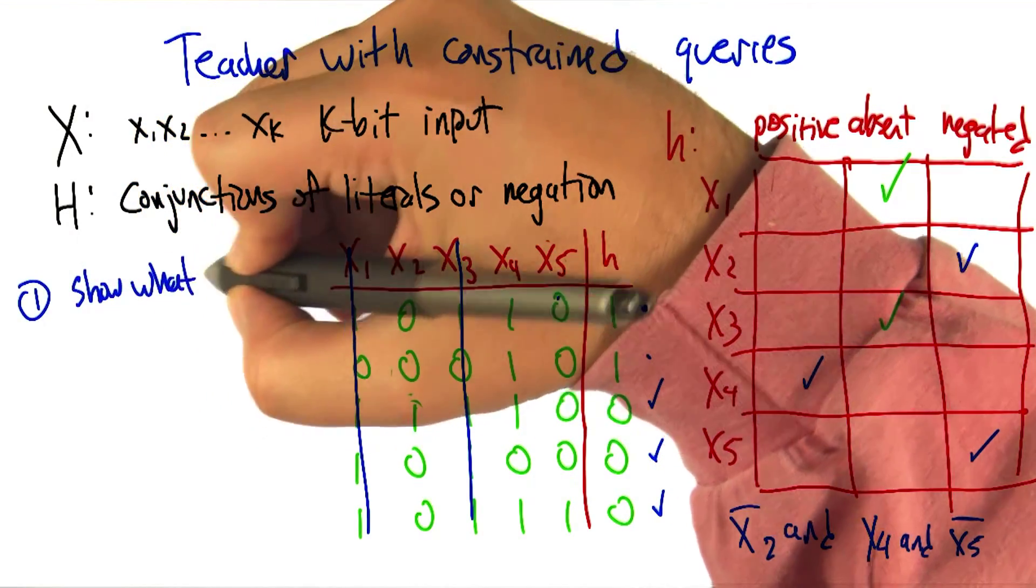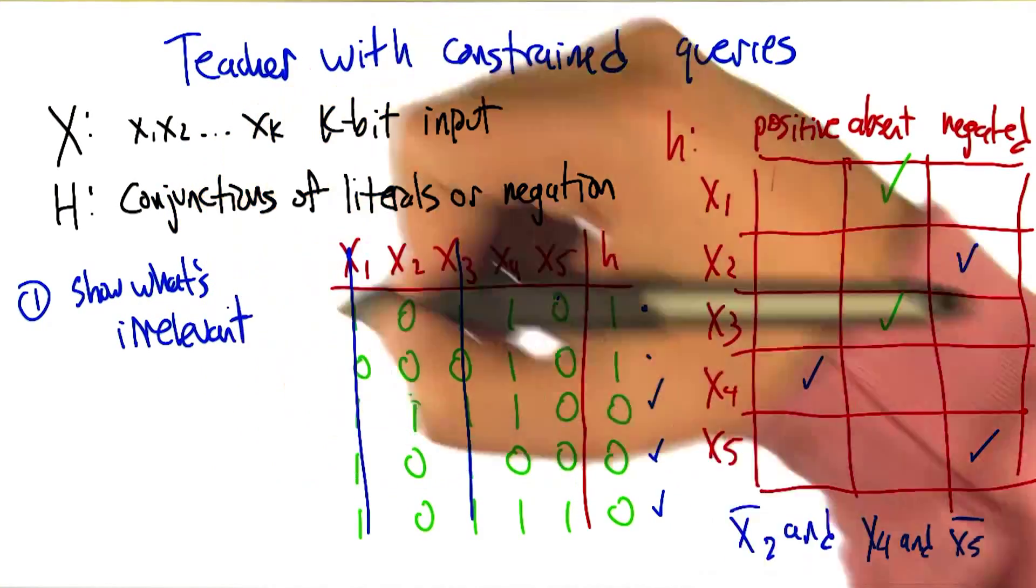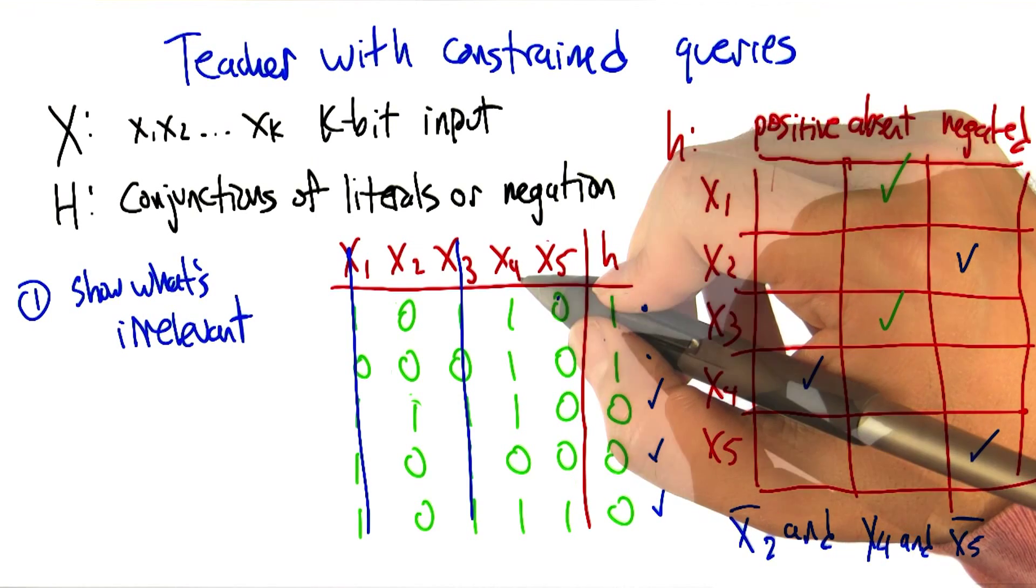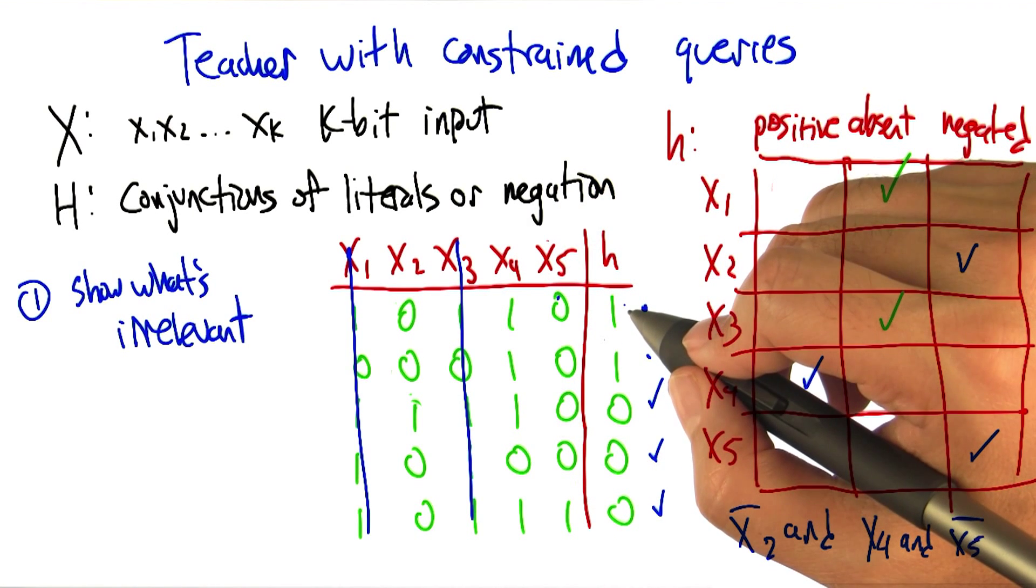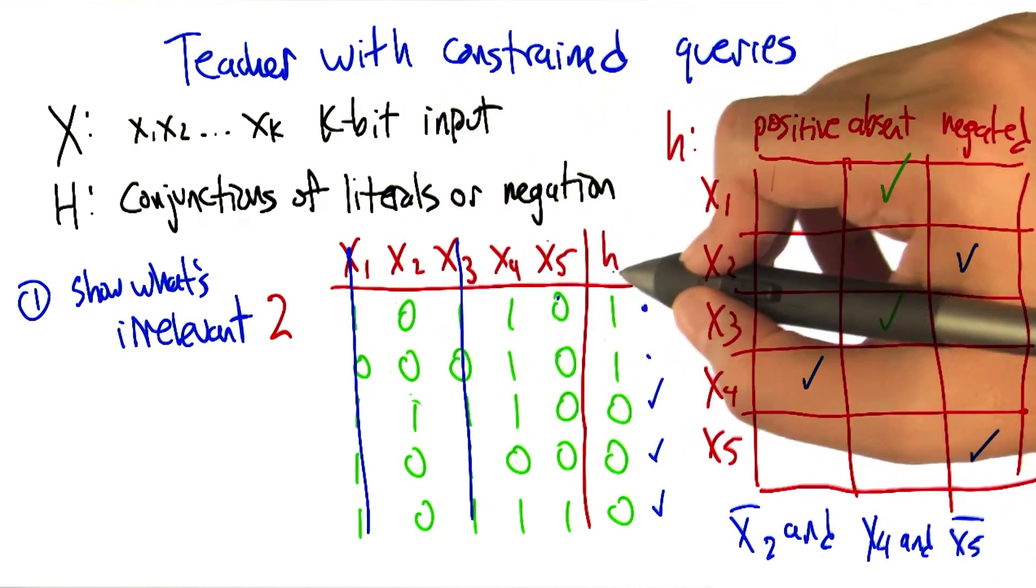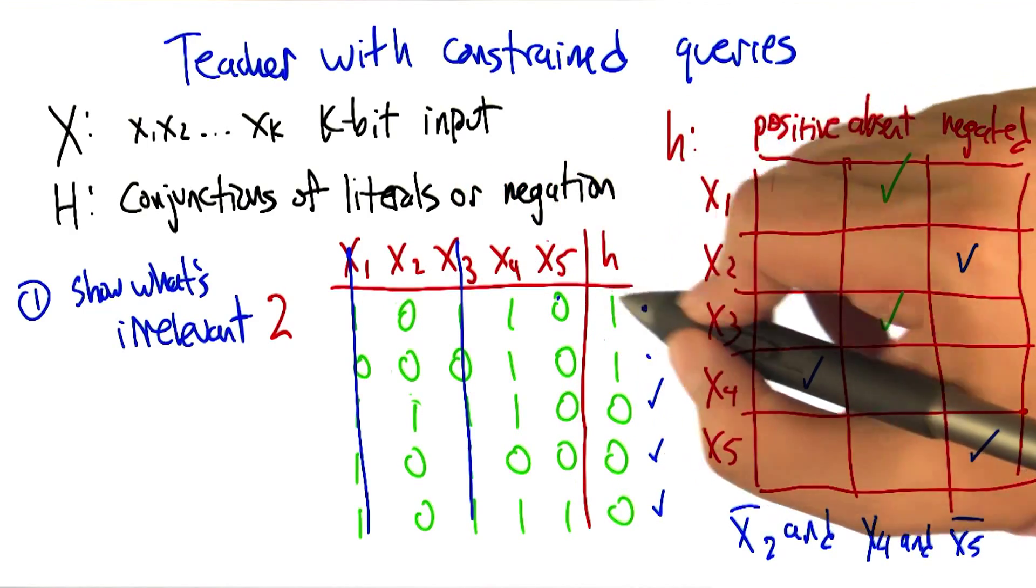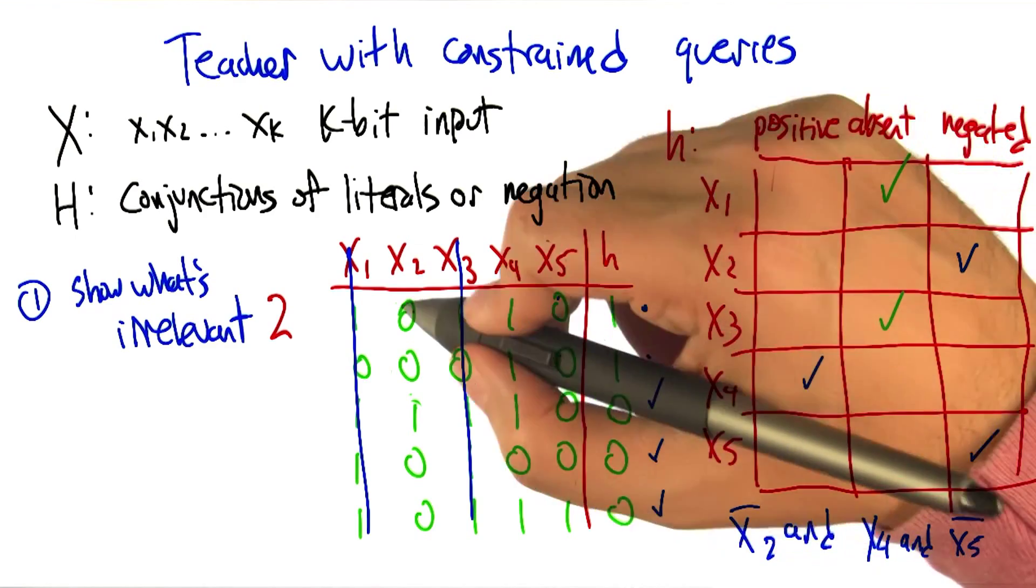Exactly. Let's even write down those two steps. So the first thing was, show what's irrelevant. And how many queries might we have needed to show that? Well, one per variable. Well actually we only need two, because what I did is I used all the relevant ones I kept the same, and all the irrelevant ones I flipped from one to the other. I just have to show you that the output is still one even though they have two different values.